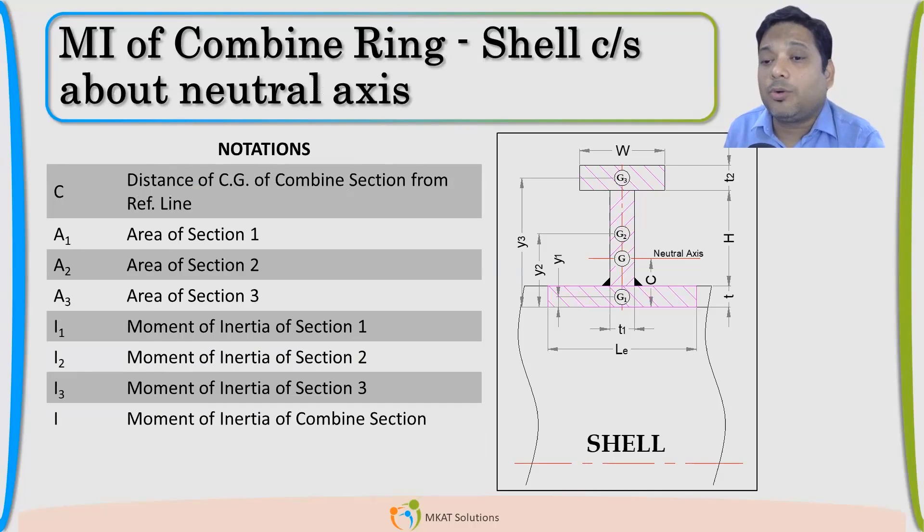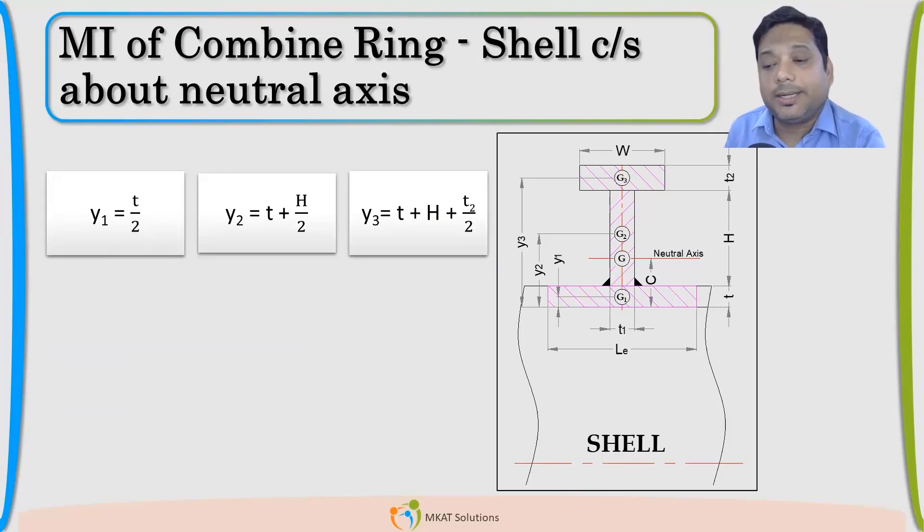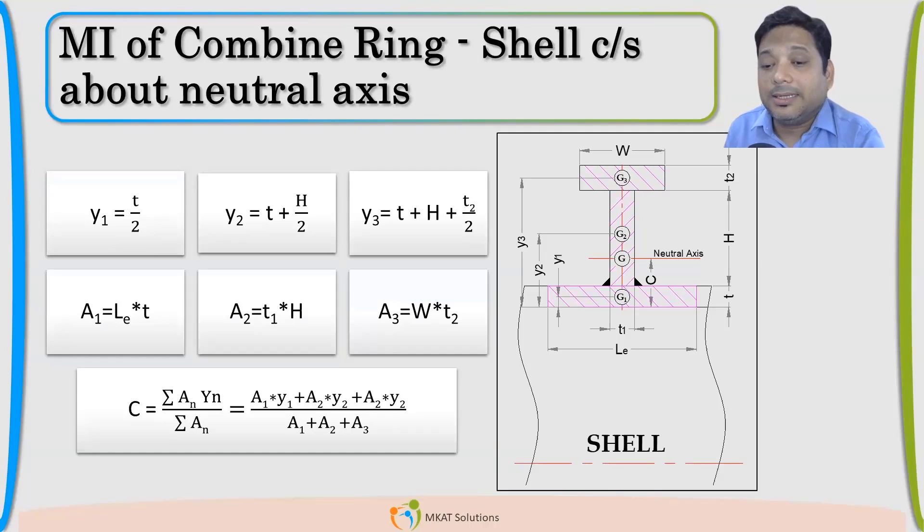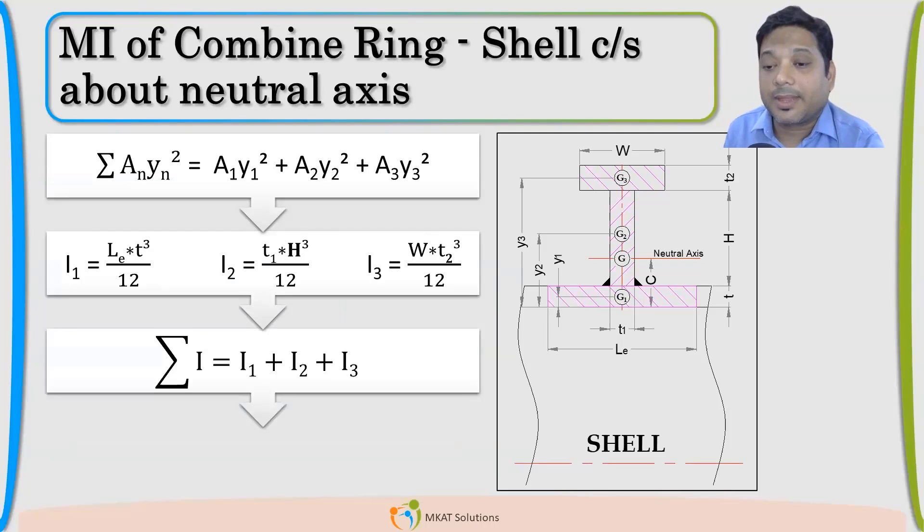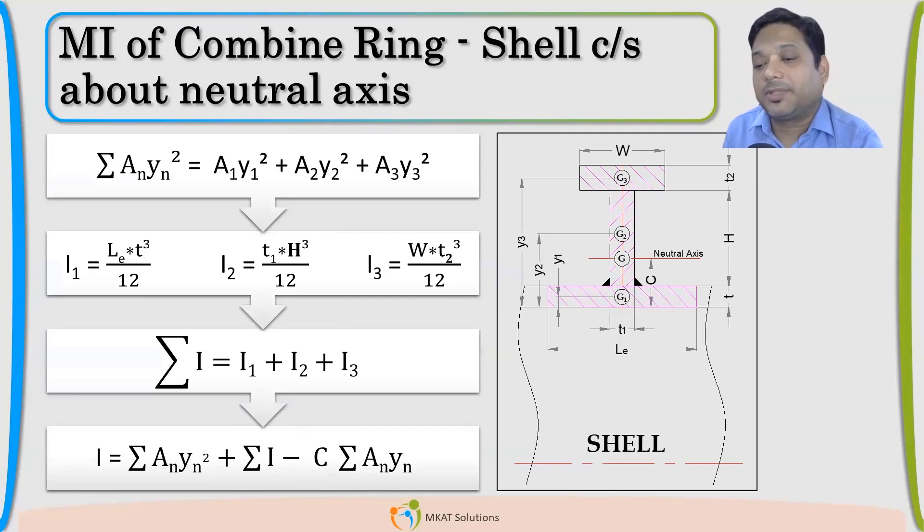Now, I can easily find out the Y1, Y2, Y3, A1, A2, A3, then the centroid of this combination, summation of AN YN square, individual moment of inertia and then combined moment of inertia by summation. This is exactly the same formula. Just by adding one more area that will take participants when we find out the summation. This is the final moment of inertia of this combined shape.